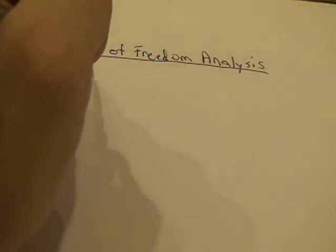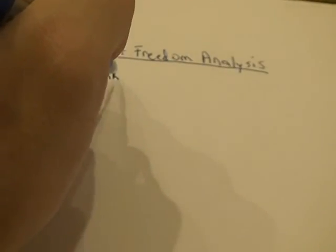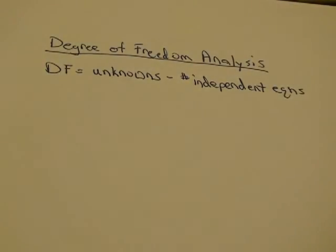So, you count up the unknowns, which in the previous equation would be two, because that was just our M1 and M2. And then, you count the number of independent equations, which, in the previous problem, we had two, since we had two species balances. So, that would give us a degree of freedom equal to zero.